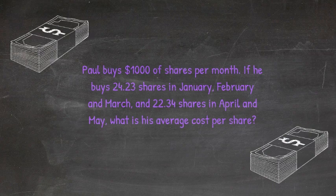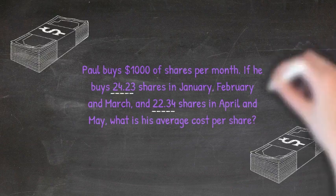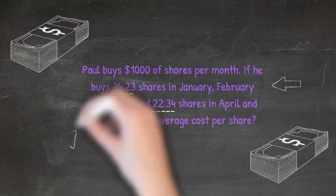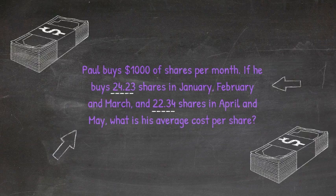We know that when calculating the average, we should be adding up the number of shares and dividing by the number of months. But we only have two amounts of shares listed, but five months. So we will need to represent some of the numbers of shares accordingly.